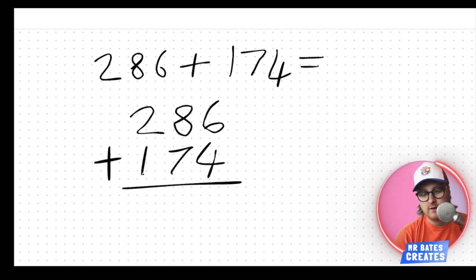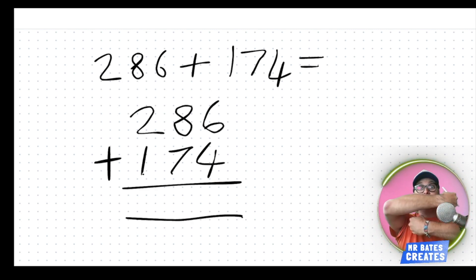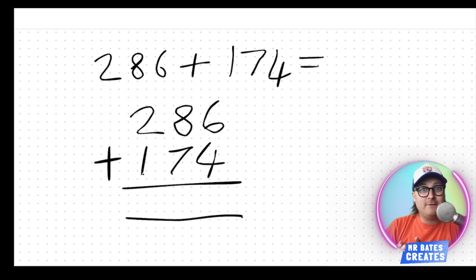So what's that going to look like? Well, let's have a little look. So we've got 286 plus 174. I'm going to write out the biggest number at the top. I'm going to put 286 and then I'm going to put another number underneath, 174.